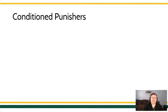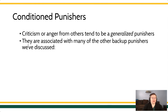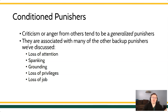We can go one step further: a conditioned punisher that is associated with lots of backup punishers may be a generalized punisher. Criticism or anger might not be just a conditioned punisher — it might be a generalized punisher, because anger tends to be associated with lots of backup punishers: loss of attention or being ignored, being spanked, grounding or loss of privileges, or even loss of a job or resources. When we have lots and lots of backup punishers, that's when we develop a generalized punisher.